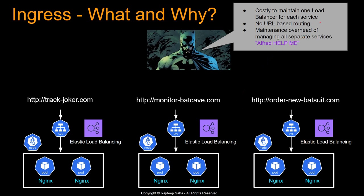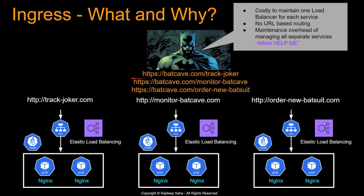Also, there is no URL-based routing here. Ideally, what we want is one website such as https://batcave.com, and then slash track-joker routes to one server, slash monitor-batcave to another, and slash order-new-bat-suit to yet another. But with three separate services and three separate load balancers, that's really not possible. There's also maintenance overhead of managing all separate services in separate deployment files, and you have to coordinate between all three deployments if they're part of the same application.